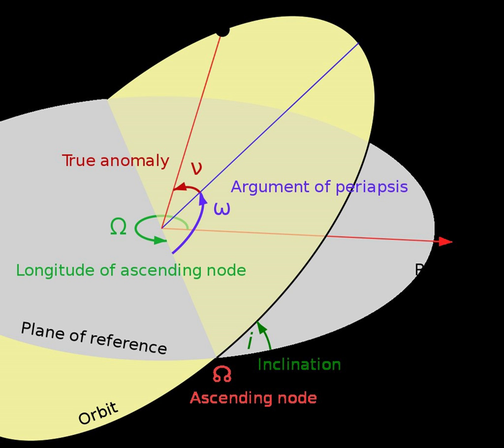Consequently, most exoplanets found by radial velocity have true masses no more than 40% greater than their minimum masses. If the orbit is almost face-on, especially for superjovians detected by radial velocity, then those objects may actually be brown dwarfs or even red dwarfs.